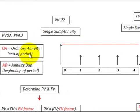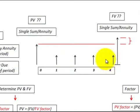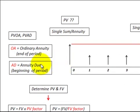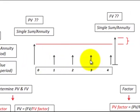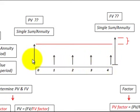An ordinary annuity has payments at the end of the period. So we have equal payments at the end of each year. Then we have AD, which stands for annuity due — like PVAD — where we get payments at the beginning of the period. So you just shift those payments over to the beginning of the period, getting the first one at the beginning of the year.